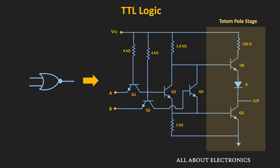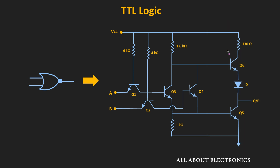The advantage of this totem pole stage is that it offers fast switching speed. In this totem pole stage, the upper transistor provides the active pull-up whenever it is in the ON condition. During the ON condition, it offers very low resistance, and because of that, it is able to drive the other TTL stages faster, hence offering fast switching speed.